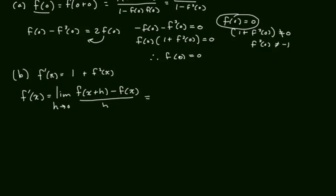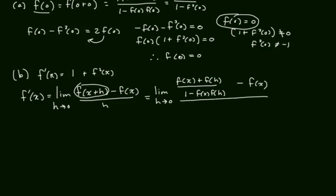Then I'm going to use property 1 from above. It's helpful to have your notes in front of you. Property number 1 from above is going to have us rewrite this expression as f of x plus f of h over 1 minus f of x f of h, and then we have minus f of x, all of that over h.